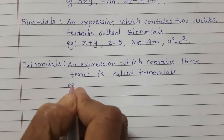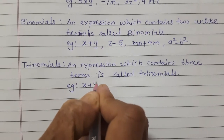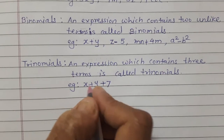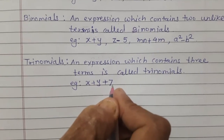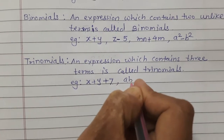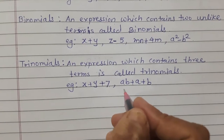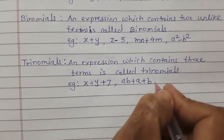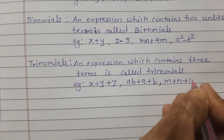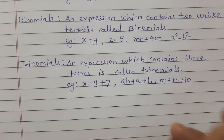Examples of trinomial: x plus y plus 7 — it has three terms, so this is an example of trinomial. Also a, b plus a plus b, and m plus n plus 10 — each has three terms, so these are called trinomials.